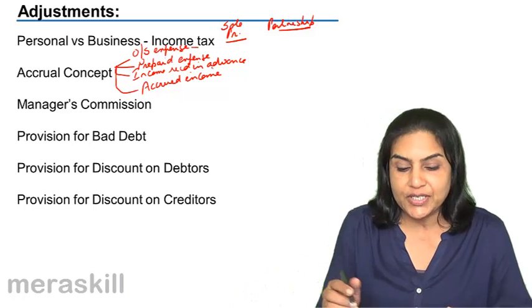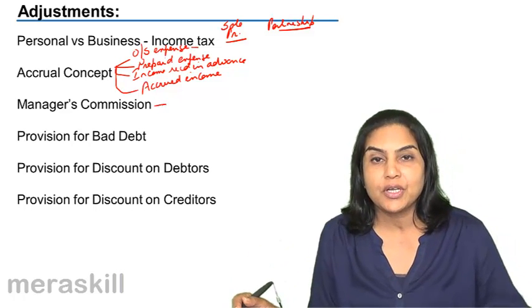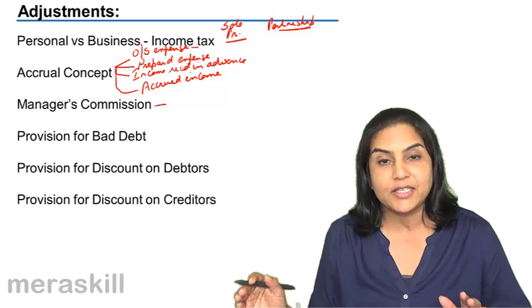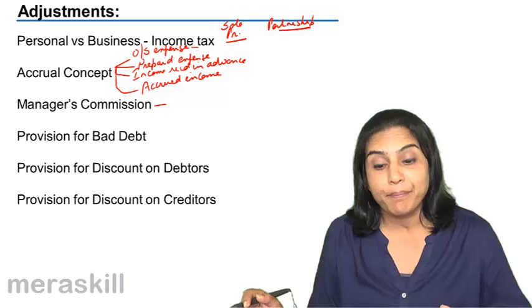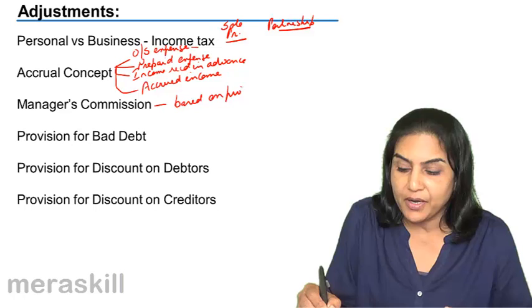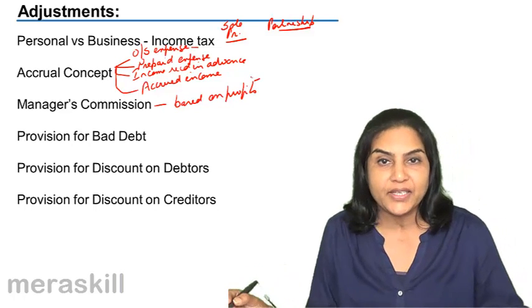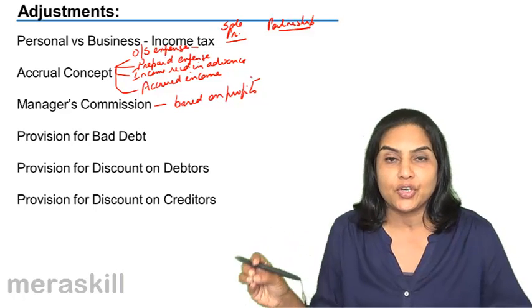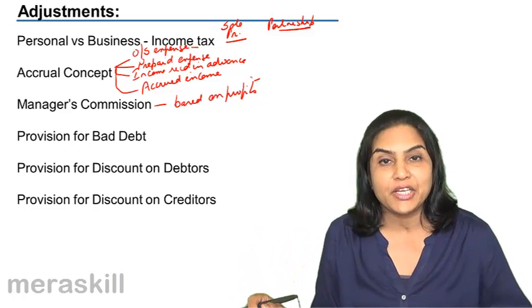Next, we will also discuss manager's commission. Very often, a business may pay its manager a commission based on profits. So, if the profits are 2 lakhs and a commission of 10% is payable, 10% of 2 lakhs becomes the manager's commission.